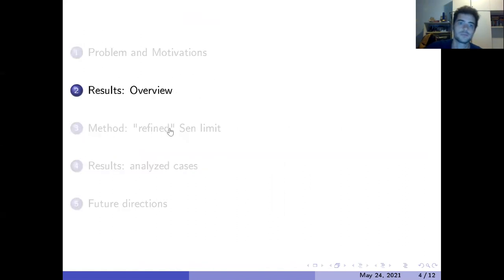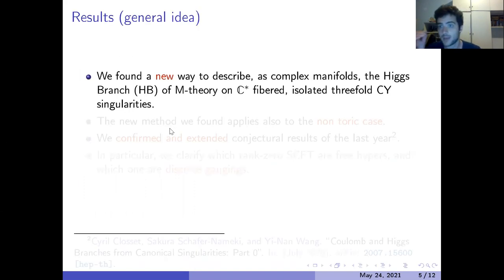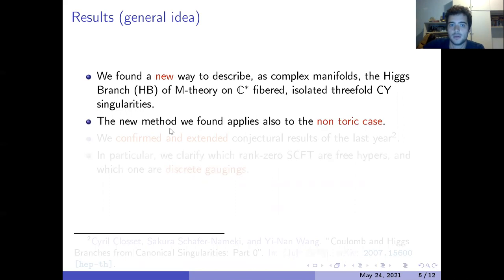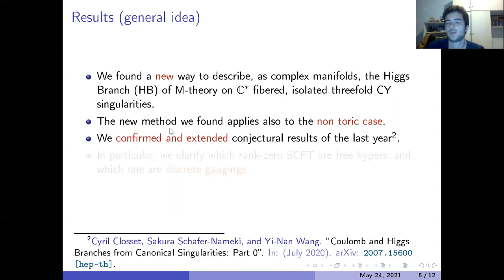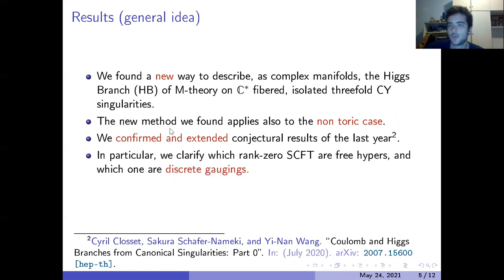Let me give an overview of the results that we obtained. First of all, we found a new way to describe as complex manifold the Higgs branch of M-theory on a C* fibered isolated threefold Calabi-Yau singularity. The point is that the method that we found in particular applies also to the non-toric case, which is much more difficult to obtain data for to do the geometric engineering. In particular, by doing so we confirmed and extended some conjectural results of last year, and actually we extended to many other non-toric cases. In particular, we clarified given the input datum of the Calabi-Yau singularity whether M-theory produces a free hyper, a discrete gauging, or a mixed situation.